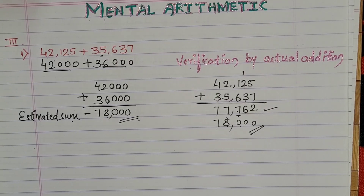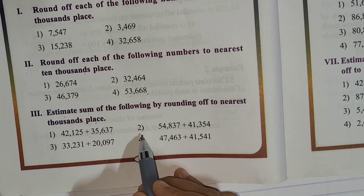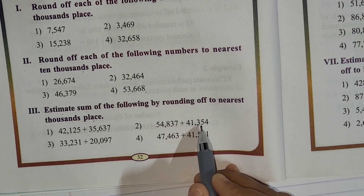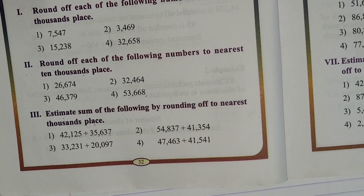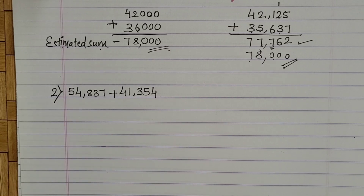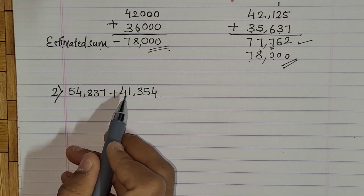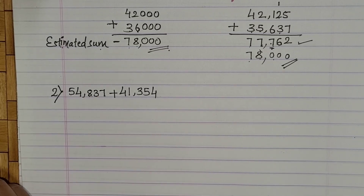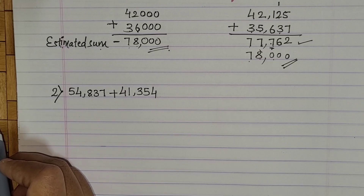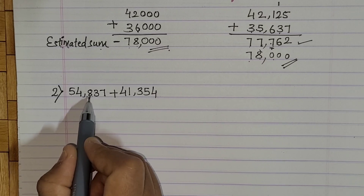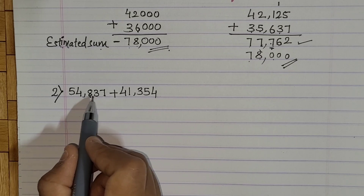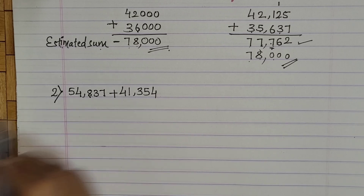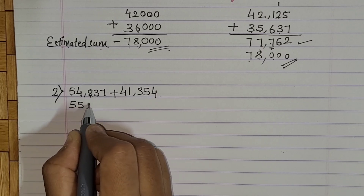Now let's move to the second one. So children, can you work on this? The second example is 54,837 plus 41,354. First we have to round off both numbers to the nearest thousand place. For 54,837, at the hundreds place we have 8, so we replace the units, tens, and hundreds by 0 and add 1 to the thousands place. So it becomes 55,000.